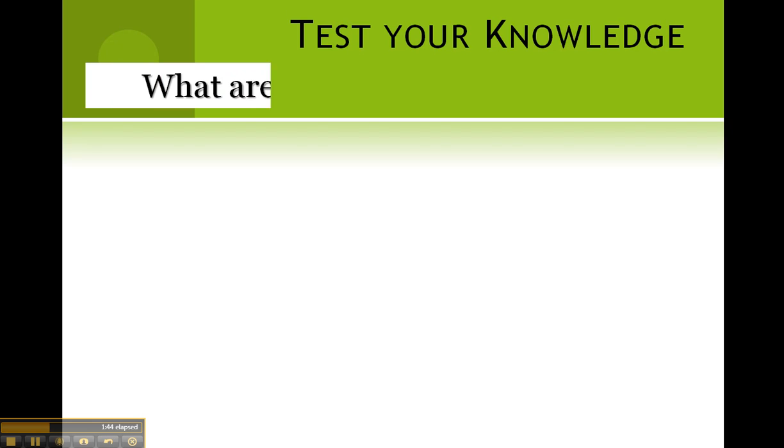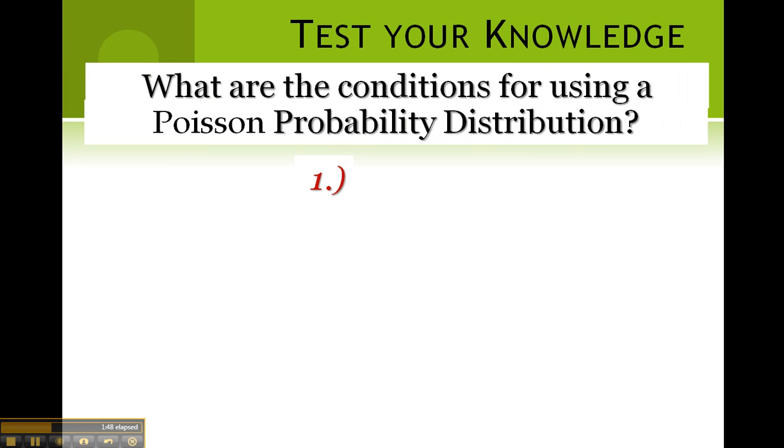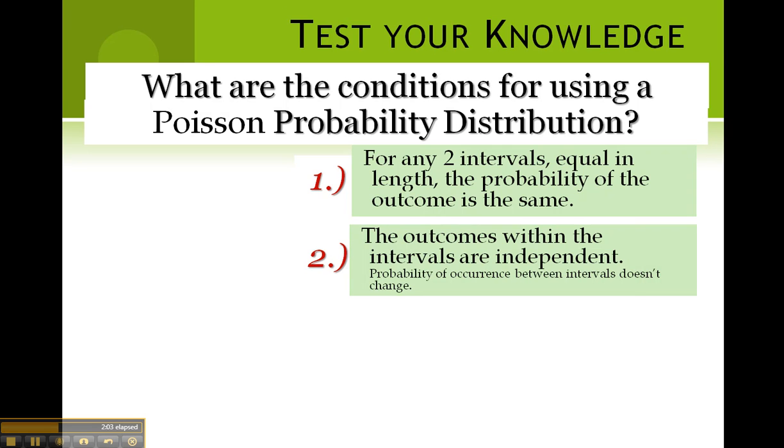Let's test your knowledge again. What are the conditions for using a Poisson probability distribution? For any two intervals equal in length, the probability of the outcome is the same. The outcomes within the interval are independent.